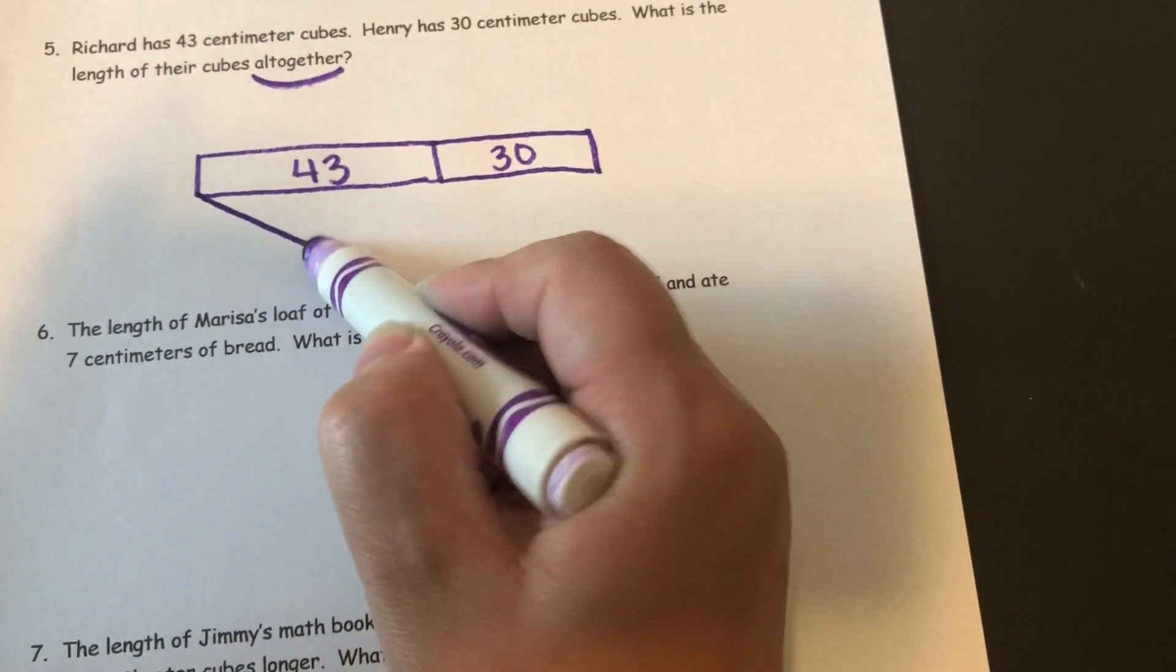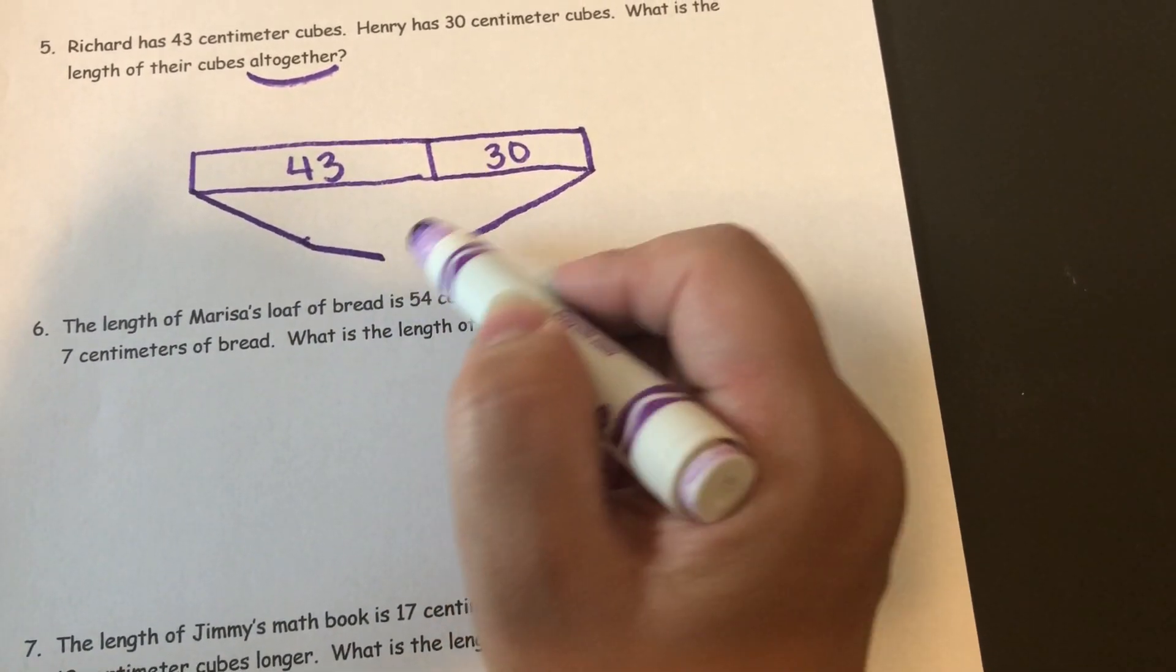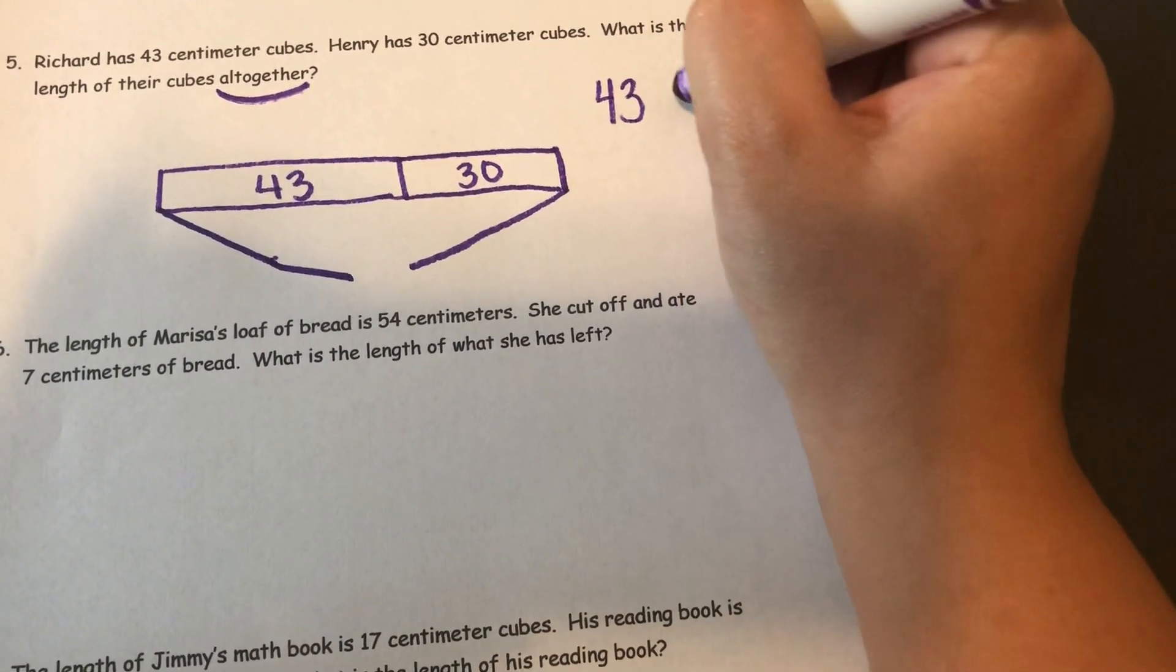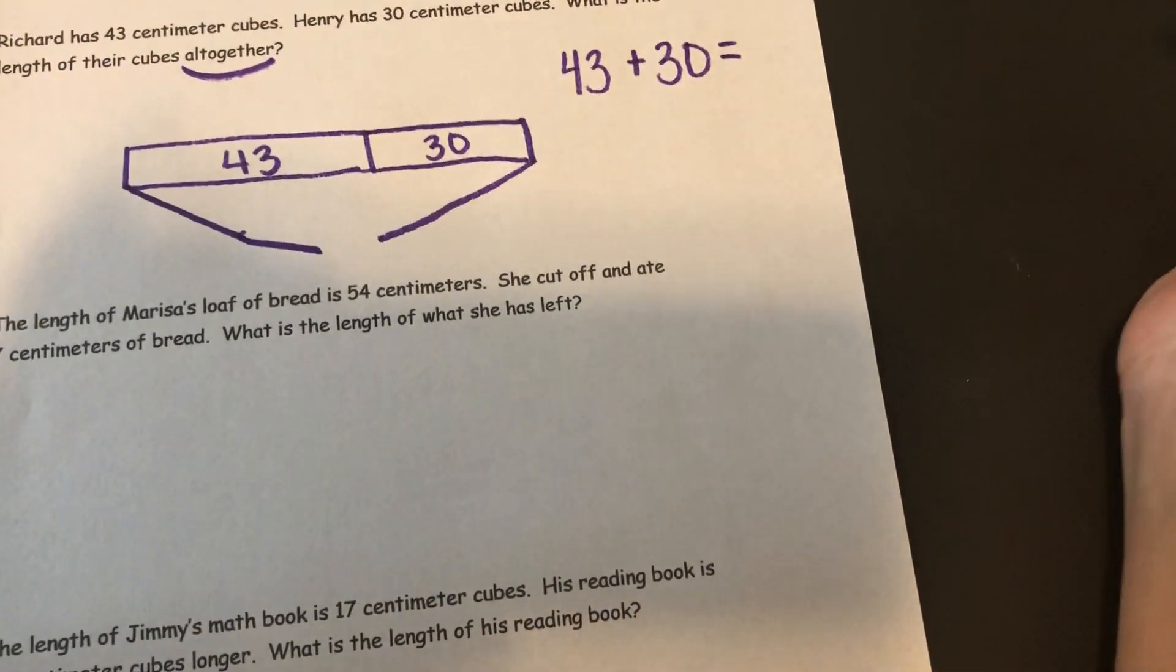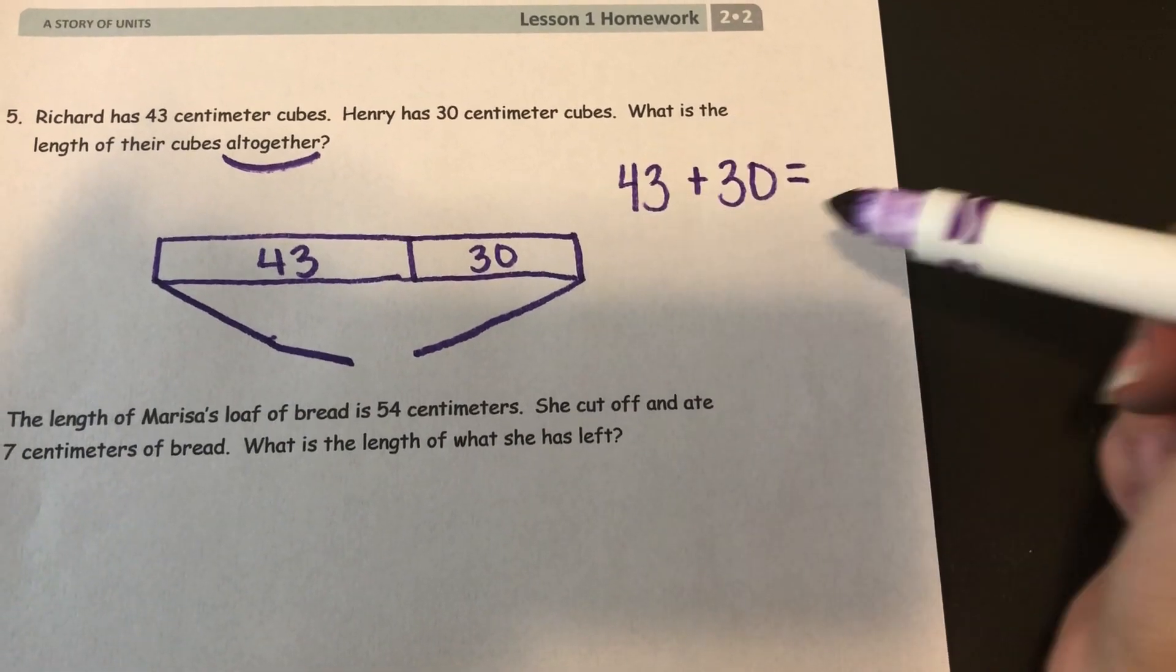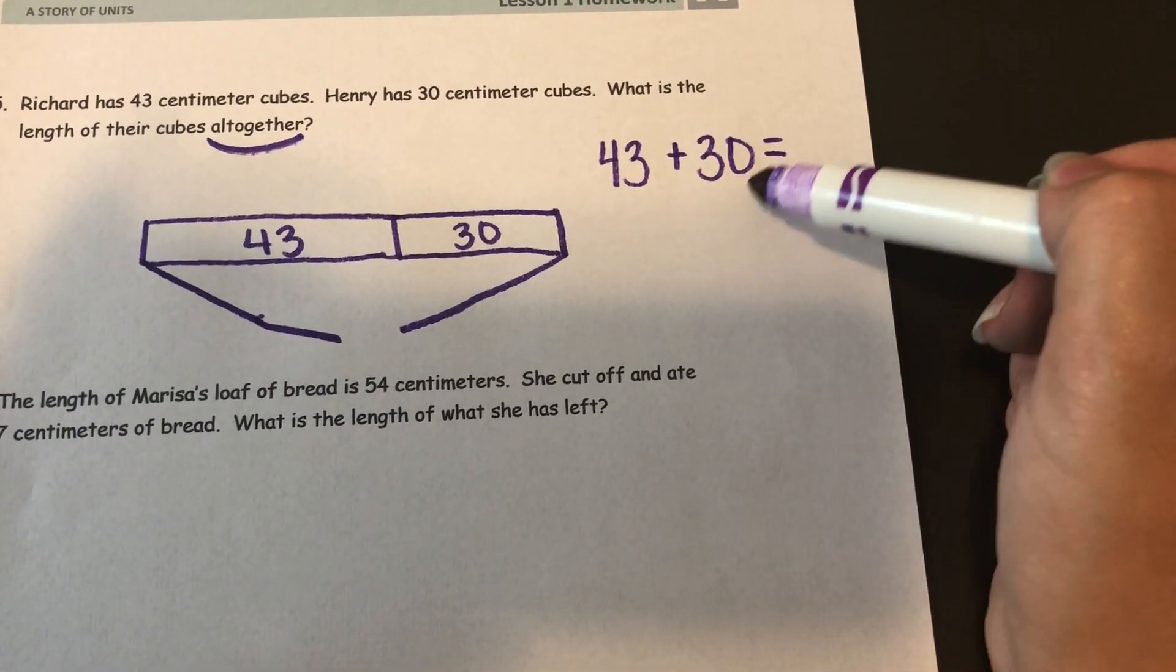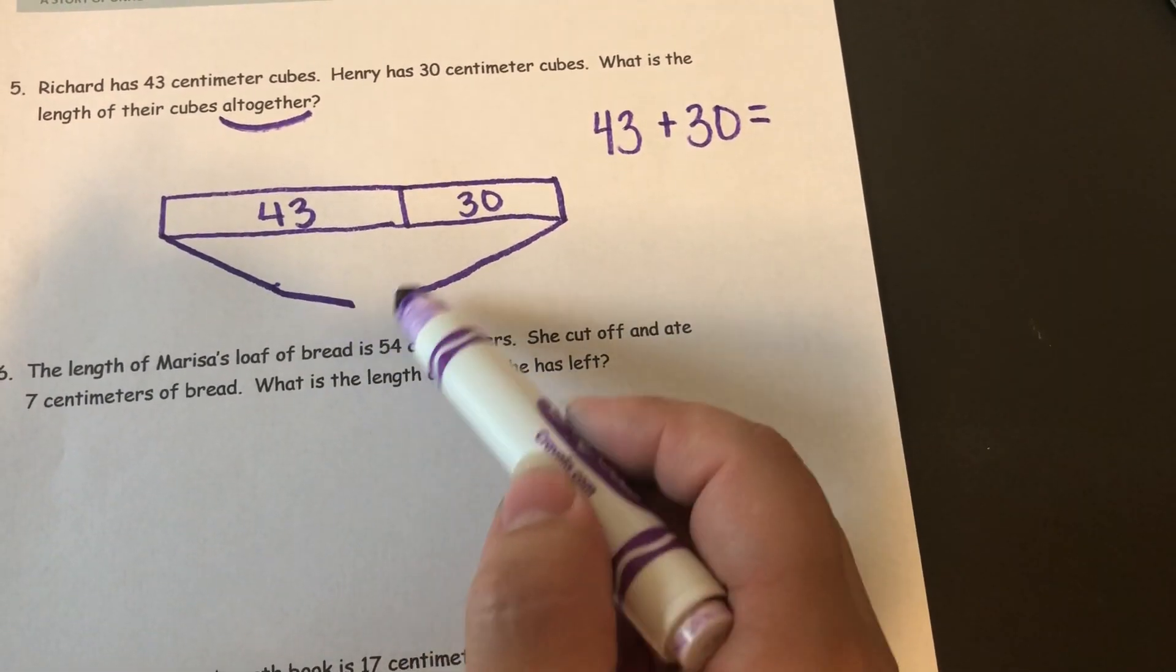And when I get my answer, I'll put my answer right in here. So I need to solve 43 plus 30. And I'll let you solve this one on your own because you don't need a strategy for it since 30 is a multiple of 10. And you'll put your answer right in here.